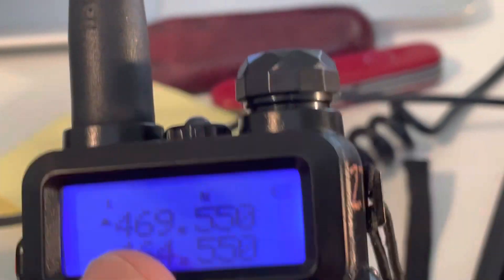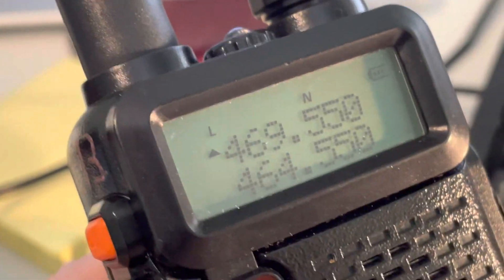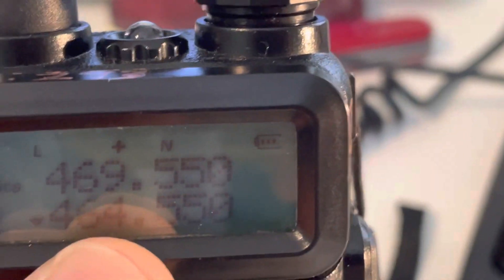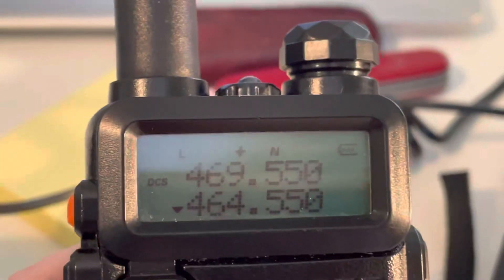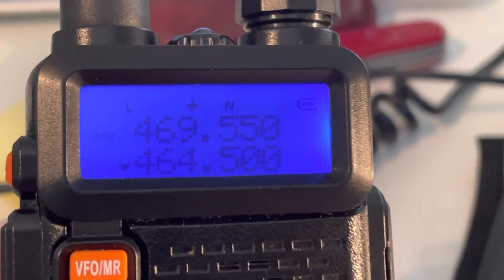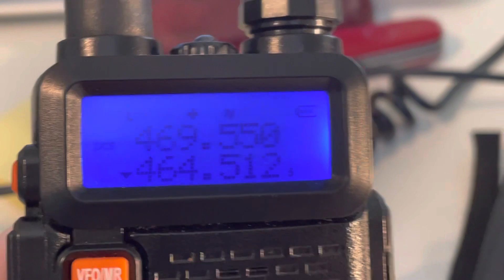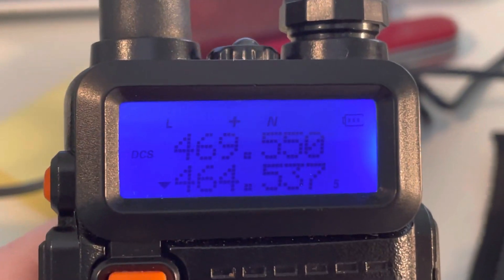So, normally this frequency, 469.550, would just be another itinerant simplex frequency, just like 99% of the usage of 464.55 is simplex. And just like the usage of the frequencies nearby, like 464.4875, and 464.5125, 464.5375, 464.5625.